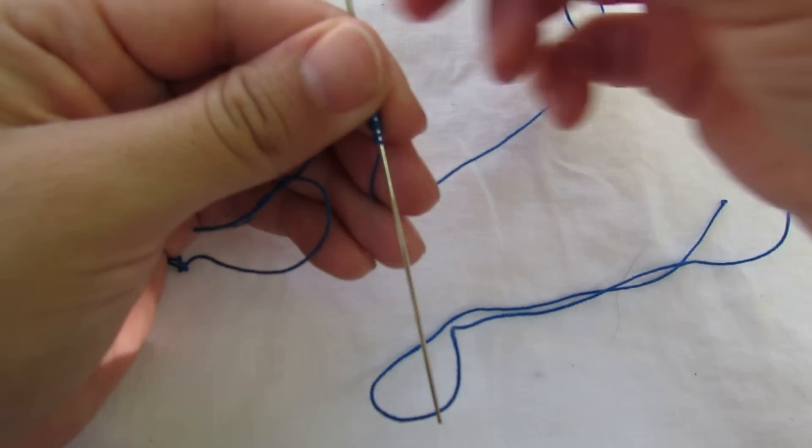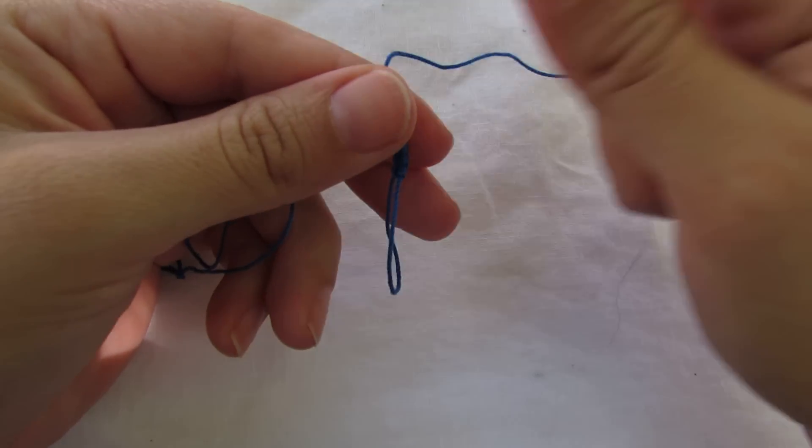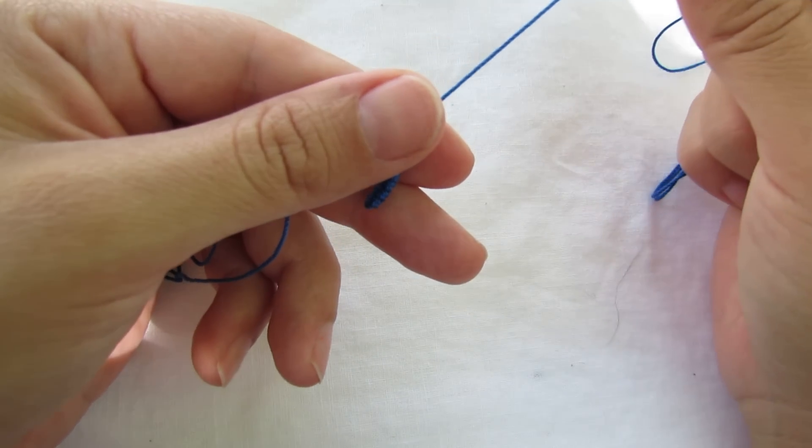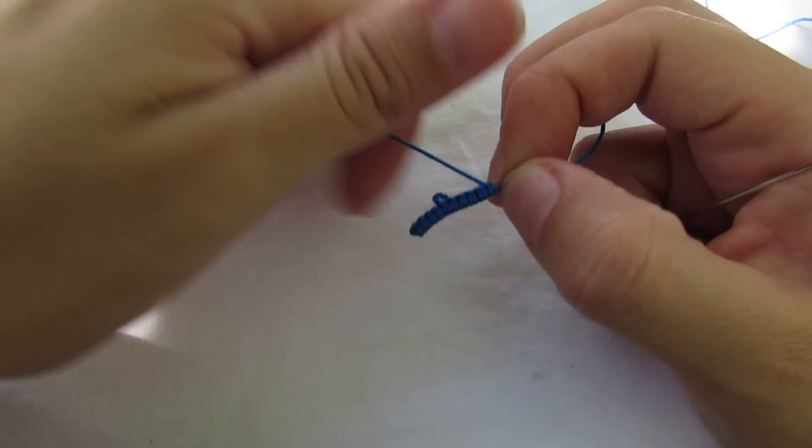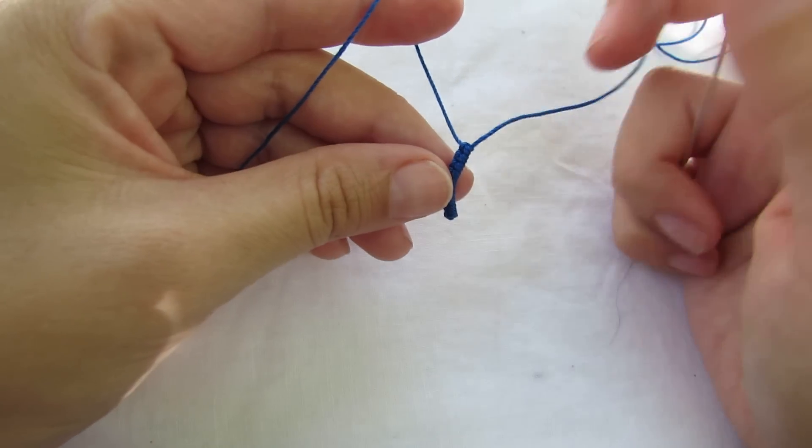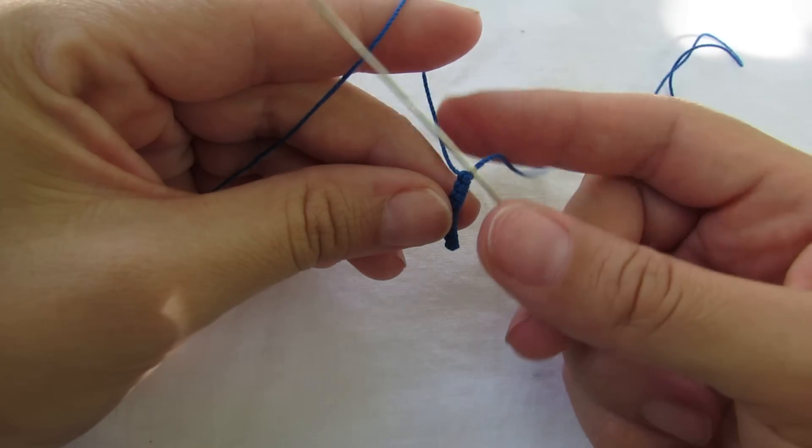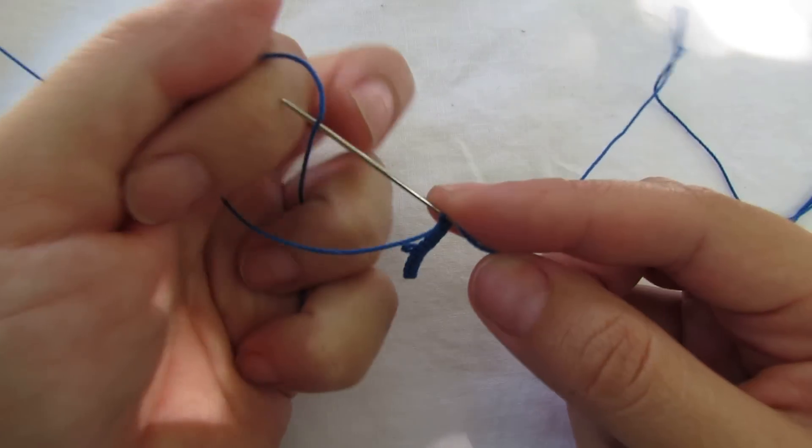Now we're going to pull our thread, pull our needle to our stitches like we're finishing up our chain. We're not going to do a knot; we're going to start our floating ring. Five double stitches.